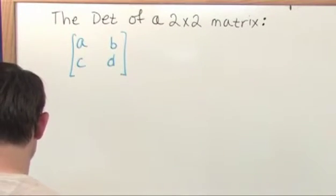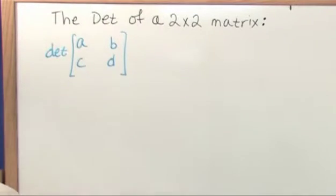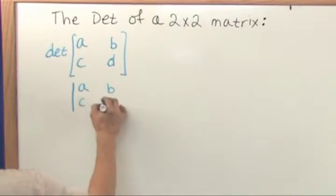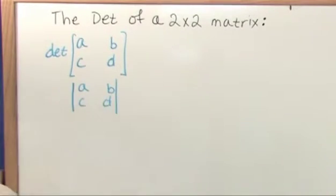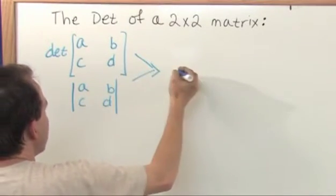And the determinant is usually written with a DET out in front, telling you it's determinant, or sometimes you'll actually just see these little vertical bars, A, B, C, D, to calculate the determinant. Either way, it's just notation.